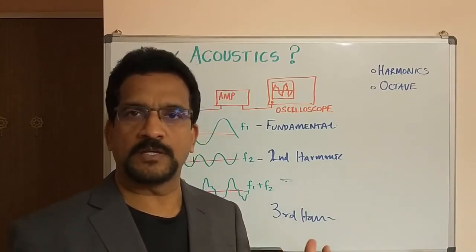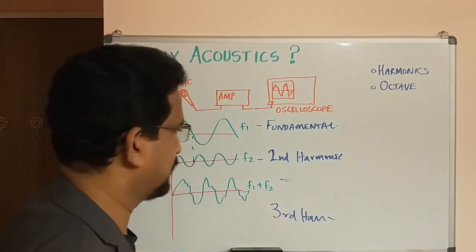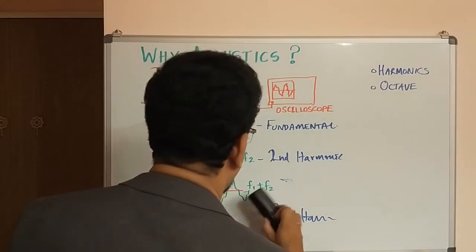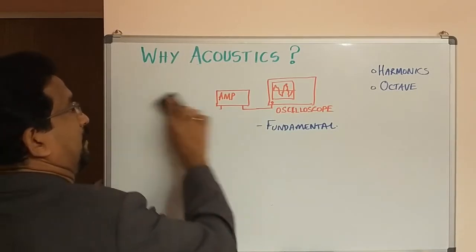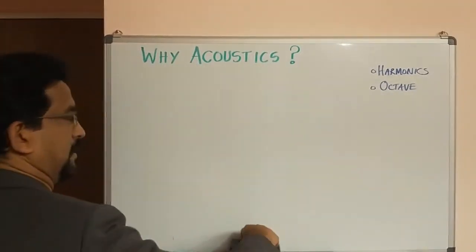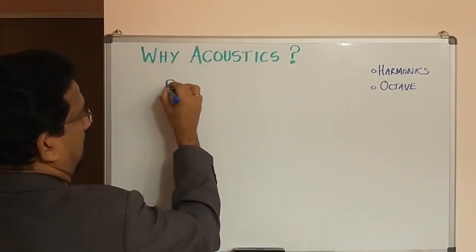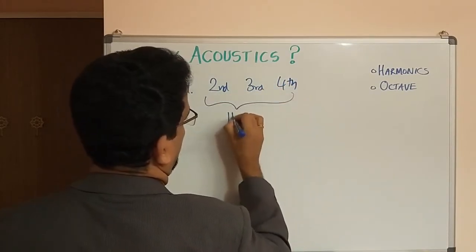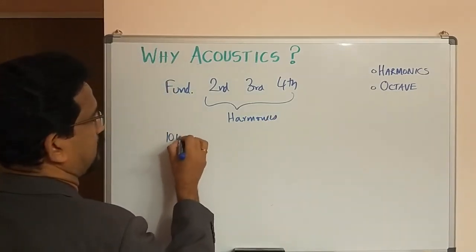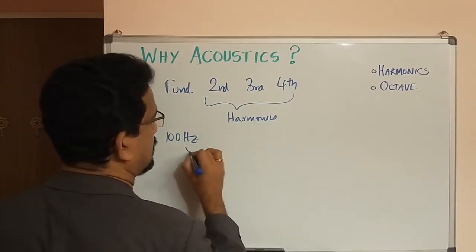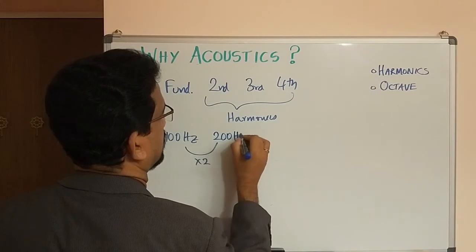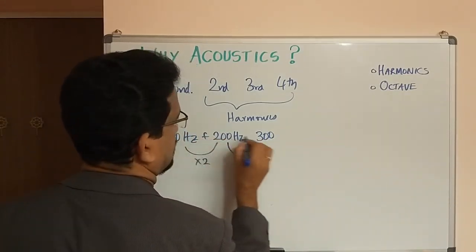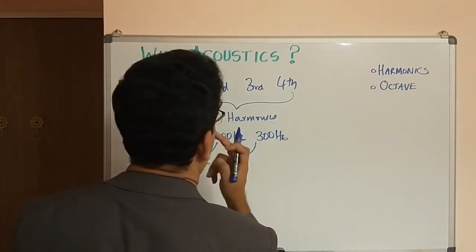This is why each of our voices is different and unique — that's how we are able to recognize our friends' voices, because the harmonics are different. So harmonics will have a fundamental and multiple higher harmonics. To summarize the pattern: suppose the fundamental frequency is 100 Hz, the second harmonic will be times two, which is 200 Hz, and the third harmonic will be 300 Hz, giving us the fourth harmonic at 400 Hz — each harmonic is an integer multiple of the fundamental.